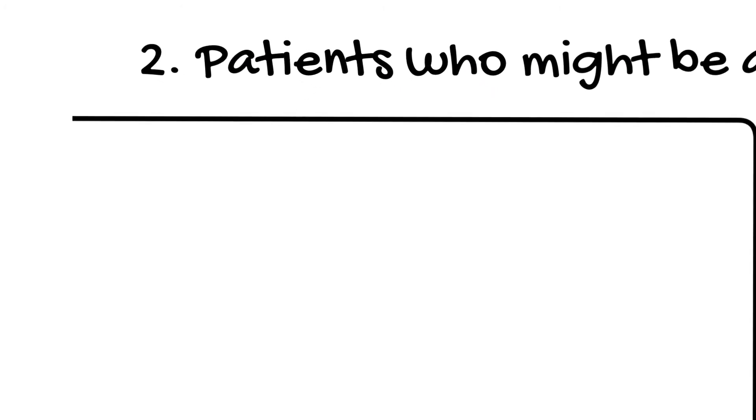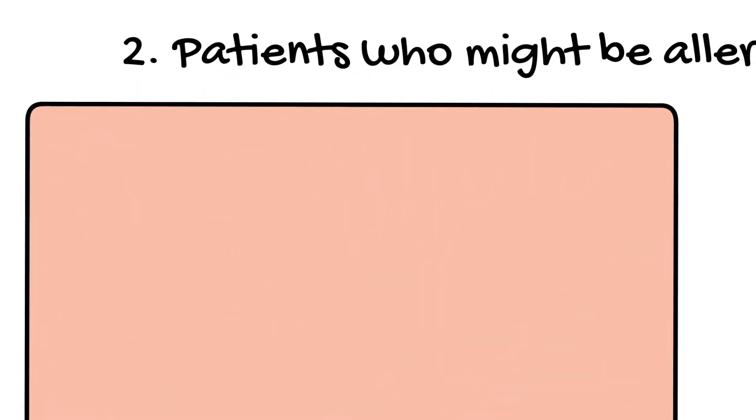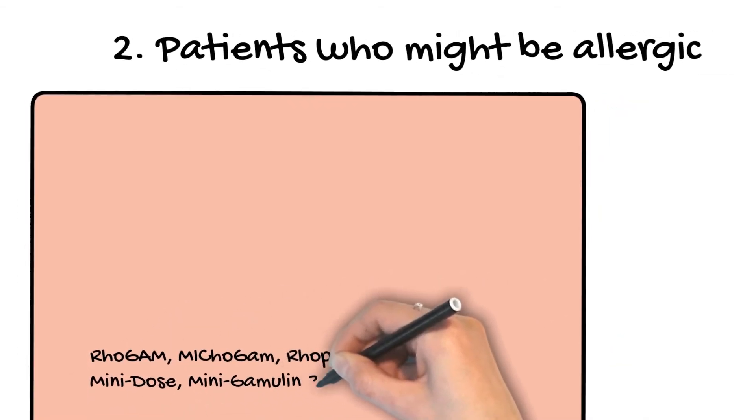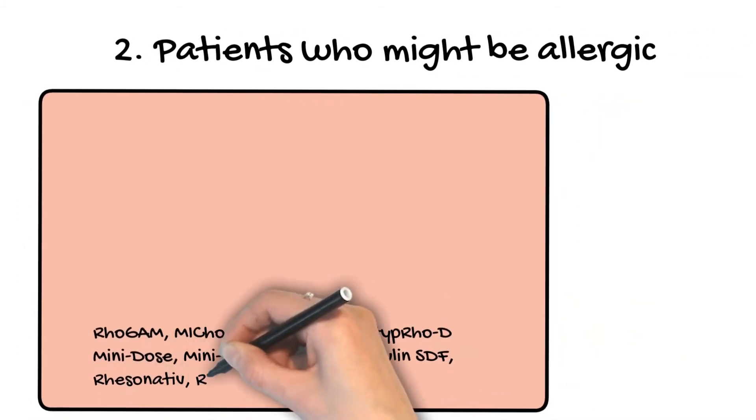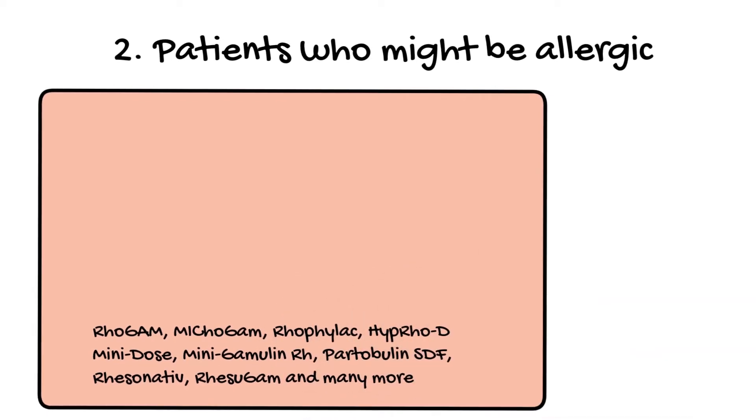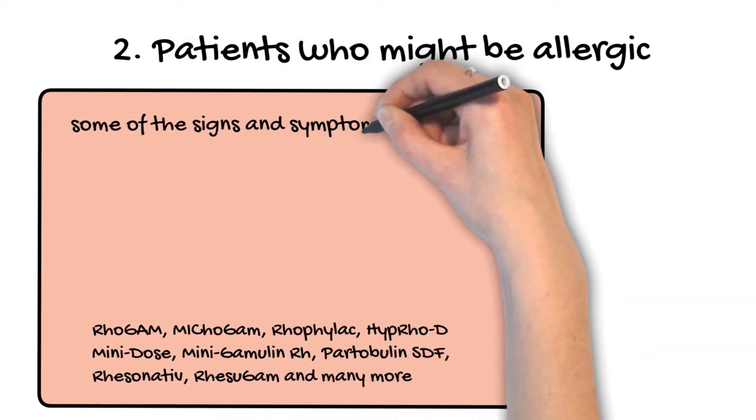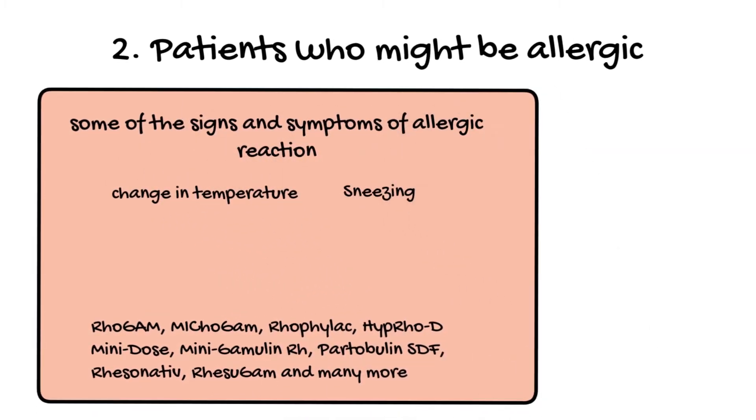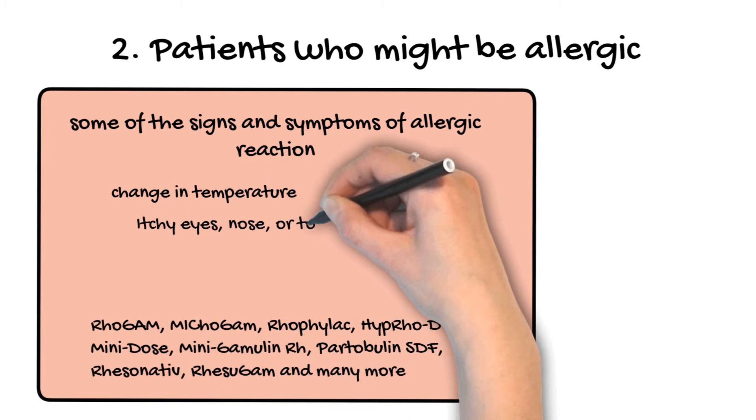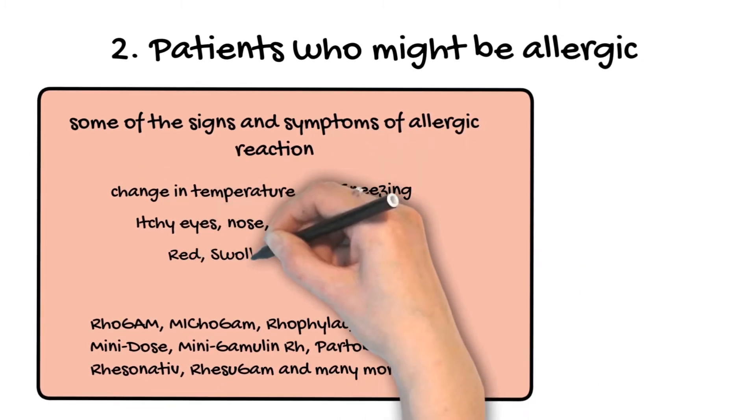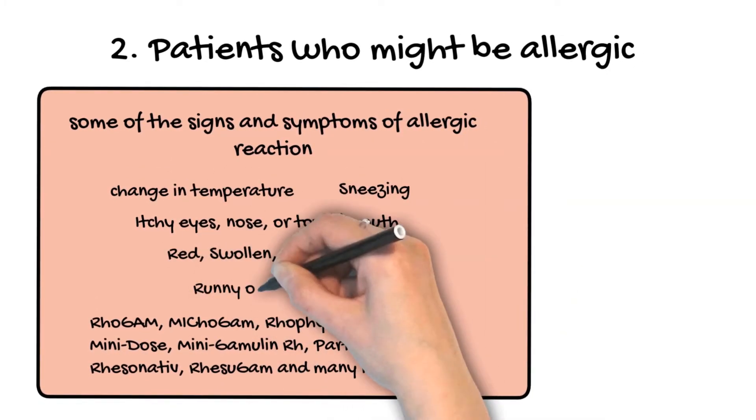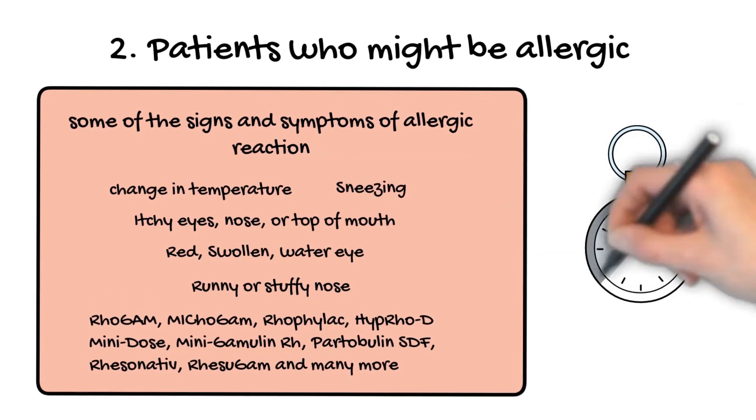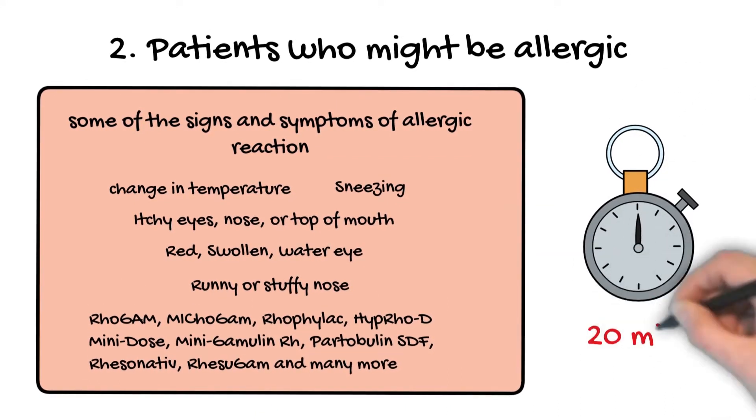Keep in mind that RHIG is like any other medication. There are many different types and brands that develop this medicine. The most common trade name is RhoGAM. If you are allergic to RhoGAM, it doesn't mean you cannot receive another type or brand of RHIG. However, if the patient has experienced an allergic reaction before when receiving RHIG, the patient should be observed for about 20 minutes after administration for signs and symptoms of allergic reaction.